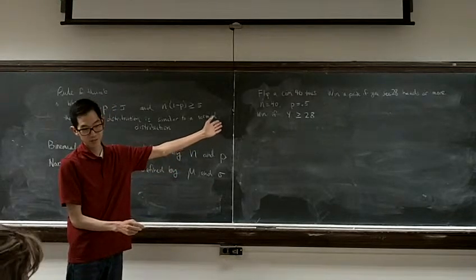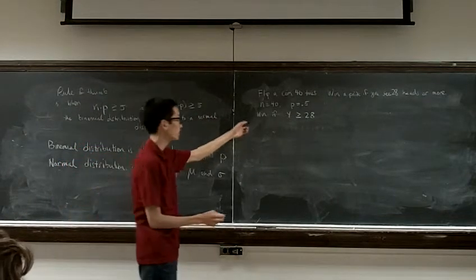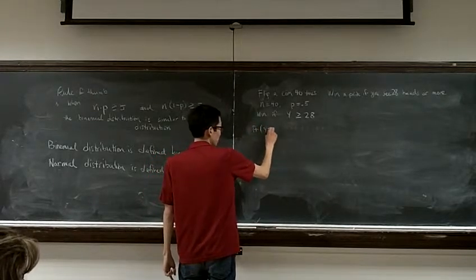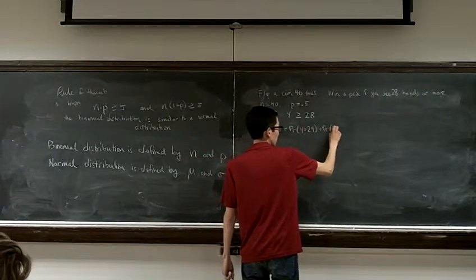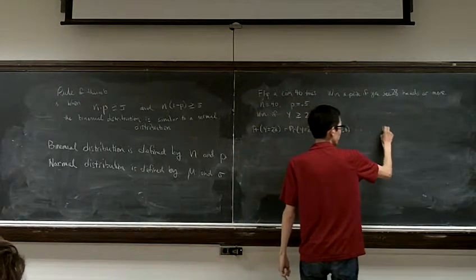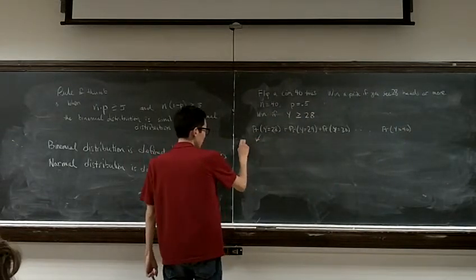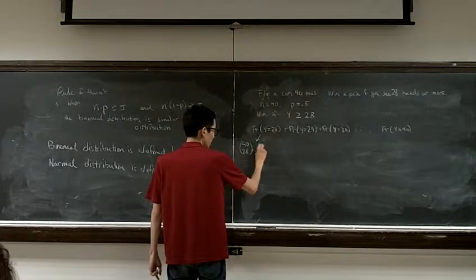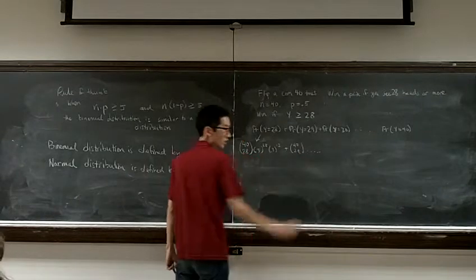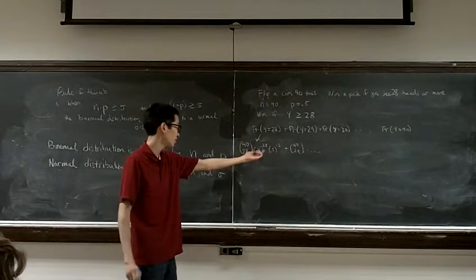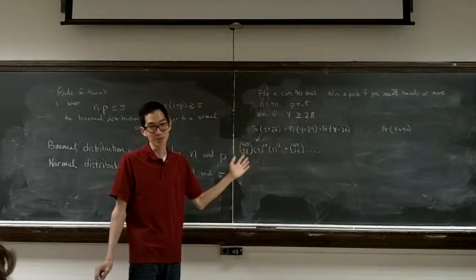If I wanted to solve this with the binomial distribution, this would be a big pain in the butt. Why? Because I would have to figure out the probability y equals 28, plus the probability that y equals 29, plus the probability y equals 30, all the way up to the probability that y equals 40. And every single one of these is going to be 40 choose 28, 0.5 to the 28, times 0.5 to the 12, plus 40 choose 29, et cetera. Our saving grace is that 0.5 and 0.5 can be combined, and everything's going to be 0.5 to the 40th. But that's still a bunch of work that we don't really want to do.